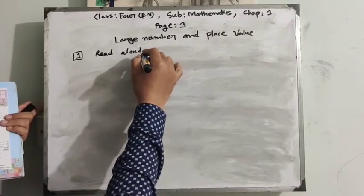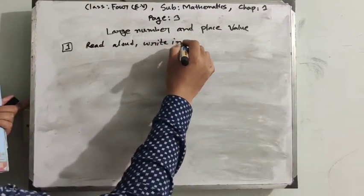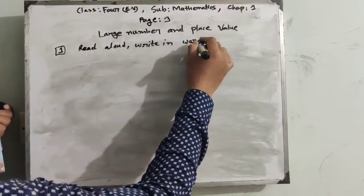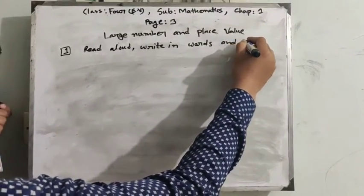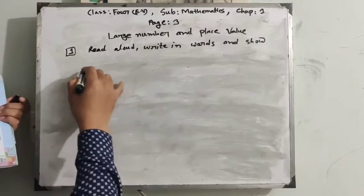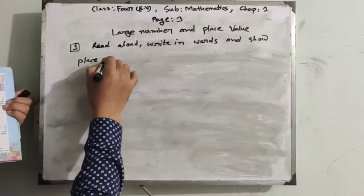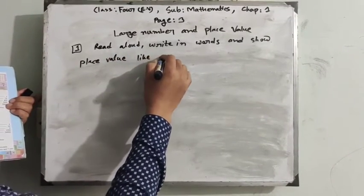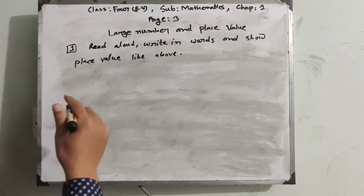Write in words and show the place value table, like the example above. Question number one.